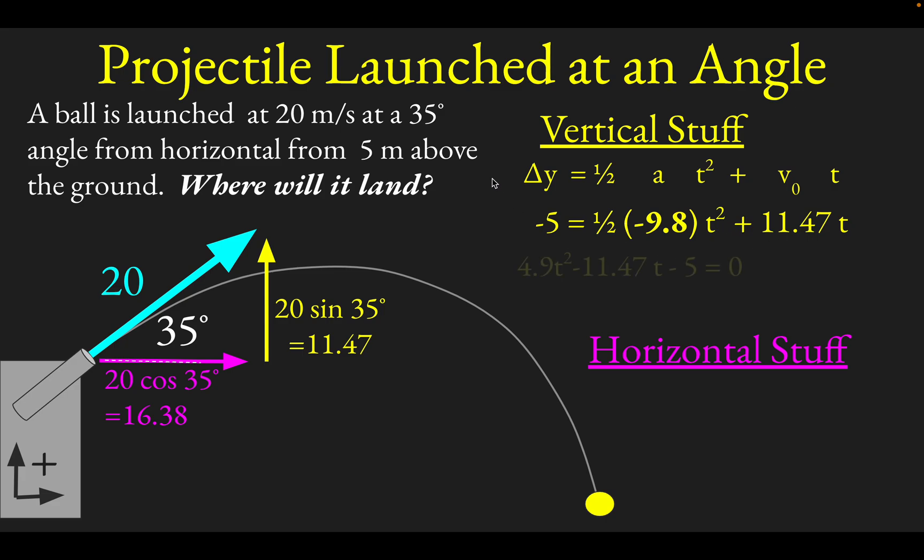We basically have a quadratic equation here. I herded everything over onto the left-hand side, so one half times negative 9.8 becomes positive 4.9, and kicking the 11.47t to the left gives us this quadratic: 4.9t² - 11.47t - 5 = 0. If you solve that with graphing or the quadratic formula, you'll find t = -0.38 seconds or 2.72 seconds. This 2.72 seconds is our relevant time.